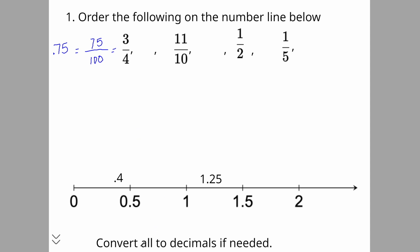So if we drag this one down, three-fourths is going to be in between 0.5 and 1. Now let's do 11 over 10. That's an improper fraction — the number on top is bigger than the number on the bottom. 10 fits into 11 one time with one remaining, so it's one and one tenth.